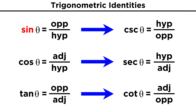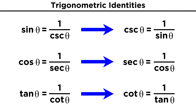We have sine, cosine, tangent, cosecant, secant, and cotangent. We should recall that these three are reciprocals of the other three, so we can express these as reciprocals of the others, or vice versa.